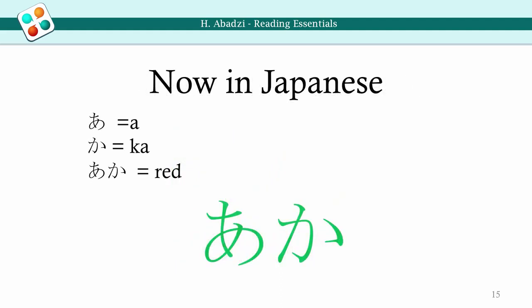Now recall the Hiragana characters you learned. Take a moment to review them. What is the color of the word below? What is the sound of the word? Did you perceive the color before reading the word? If you saw the color first, you are still reading letter-by-letter in Hiragana.